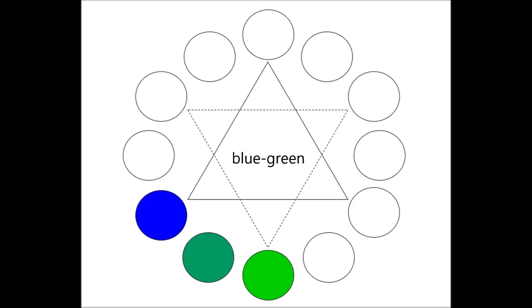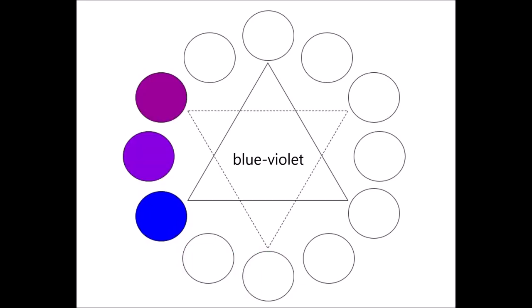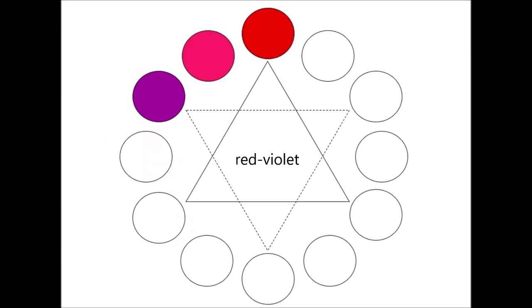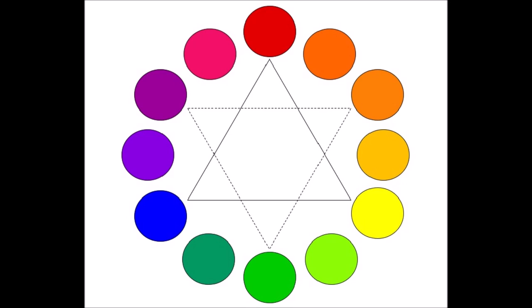Blue-green is created by mixing blue and green. Blue-violet is created by mixing blue and violet. And red-violet is created by mixing red and violet. In all, a total of 12 colors make up the basic color wheel.